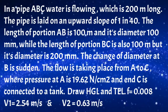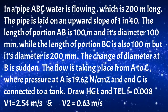In pipe ABC, water is flowing over a total length of 200 meters. The pipe is laid on an upward slope of 1 in 40. The length of section AB is 100 meters with diameter 100 mm, while section BC is also 100 meters but with diameter 200 mm. The change of diameter at B is sudden. Flow is from A to C, pressure at A is 19.62 N/cm², and end C is connected to a tank. Draw the hydraulic gradient line and total energy line. Take f = 0.008. Velocity V1 = 2.44 m/s and V2 = 0.63 m/s.